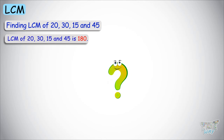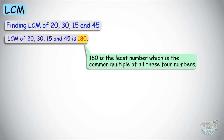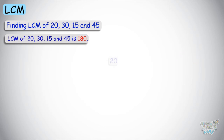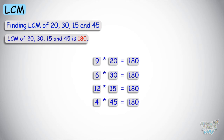What does it mean that 180 is the LCM, the common multiple of all four numbers? 9 times 20 is 180. 6 times 30 is 180. 12 times 15 is 180. And 4 times 45 is 180. So 180 is the least common multiple of 20, 30, 15, and 45.